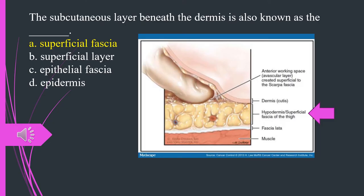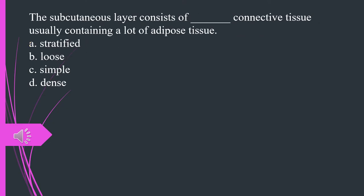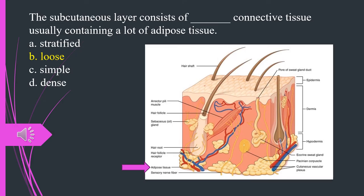The subcutaneous layer consists of what connective tissue usually containing a lot of adipose tissue? A. Stratified. B. Loose. C. Simple. D. Dense. The answer is B. Loose.